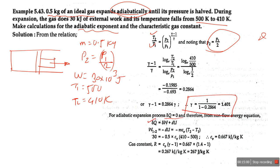For the adiabatic process, DQ is zero. Work done is with us as 30 kilojoule. From the first law, work done equals minus change in internal energy. The change in internal energy is mCV × ΔT. With mass, ΔT, and gamma known, we find CV from CV = R/(gamma-1), then calculate change in internal energy. This numerical is the same approach as the previous one.